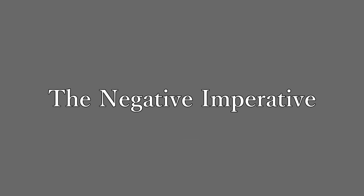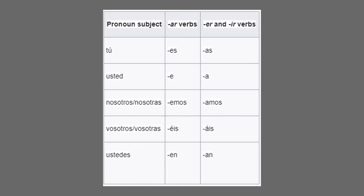Next up, we have the negative imperative — this is when you tell somebody not to do something. To conjugate in this tense, put the word no before the verb. For AR verbs using hablar: tú no hables (don't speak), usted no hable (don't speak formally), nosotros no hablemos (let's not speak), vosotros no habléis (don't speak, you all), ustedes no hablen (don't speak, you all). ER and IR verbs have the same conjugation: tú no comas (don't eat), usted no coma (don't eat formally), nosotros no comamos (let's not eat), vosotros no comáis (don't eat, you all), ustedes no coman (don't eat, you all).